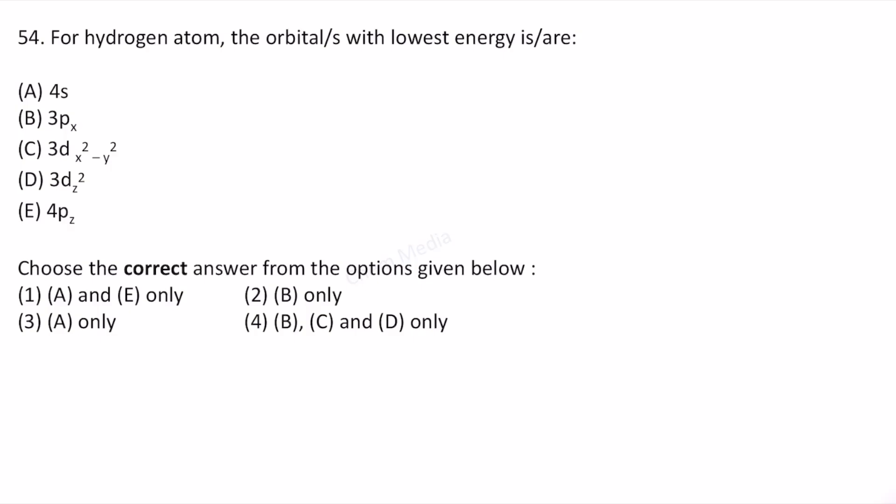Here is a question based on quantum mechanical model of atom. For hydrogen atom, the orbital or orbitals with lowest energy is/are? For hydrogen atom we have only one electron, therefore the energy of the electron in the nth orbit can be written as...